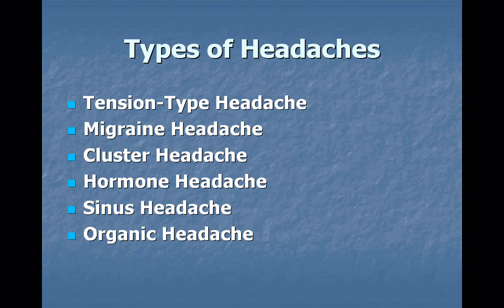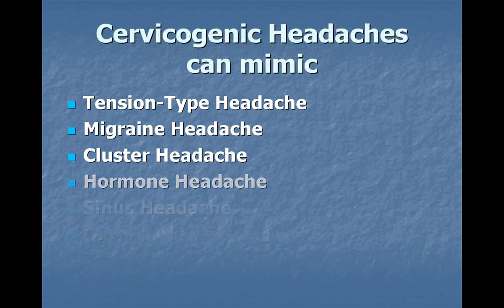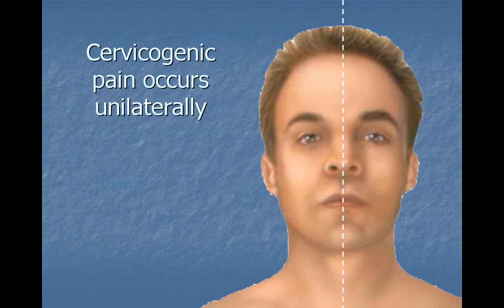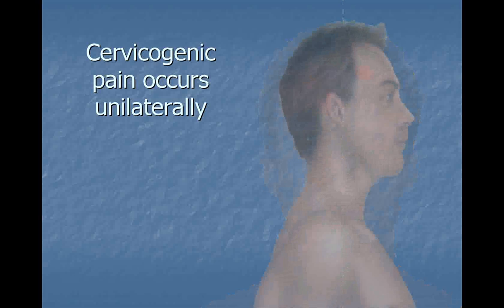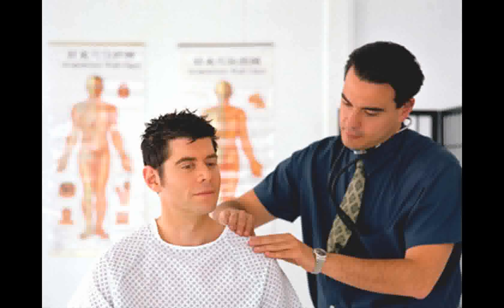A cervicogenic headache can be difficult to recognize because it can mimic tension type, migraine, and cluster headaches. Generally, cervicogenic headaches occur unilaterally, or only on one side of the head. Pressure on the neck and certain postures may increase the pain, and that pain may travel from the head down to the neck and the shoulder. Since cervicogenic headaches mimic other headache types, a diagnosis based on examination of the neck and the cervical spine is necessary.